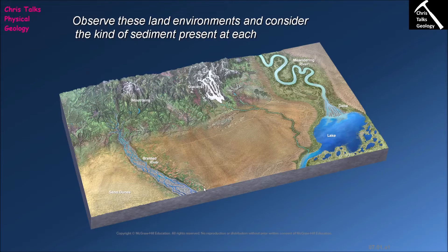This allows us to work out that this sedimentary rock formed in a desert, or this one formed in a meandering river system. By doing this, we can essentially determine what the environment was when that sediment was being deposited. And if we do that for the same area over a long period of geologic time, we can see how that environment has been changing throughout Earth history. So sedimentary rocks are extremely important to geologists for this reason.